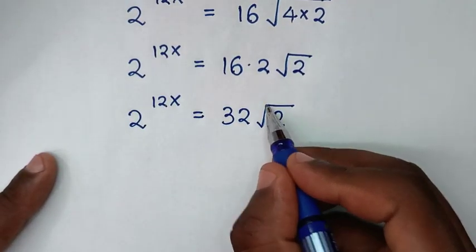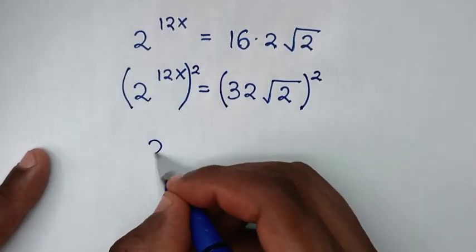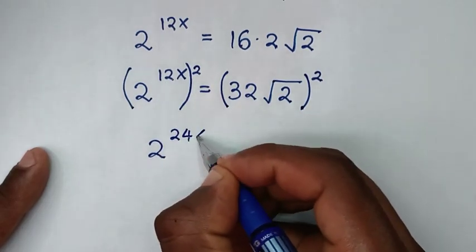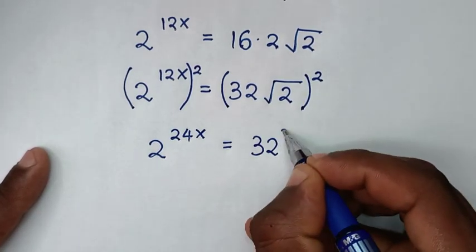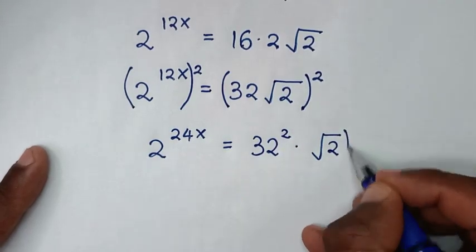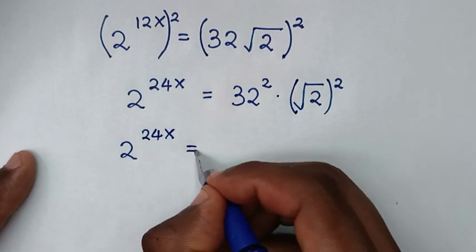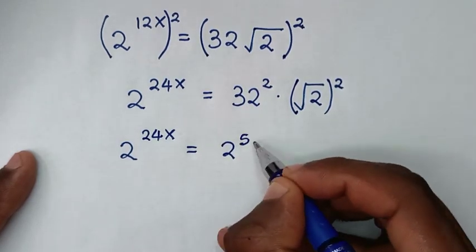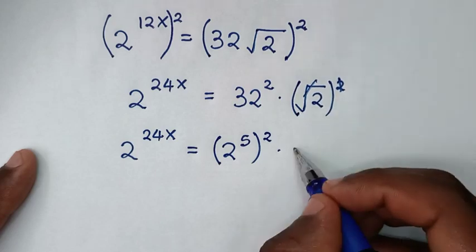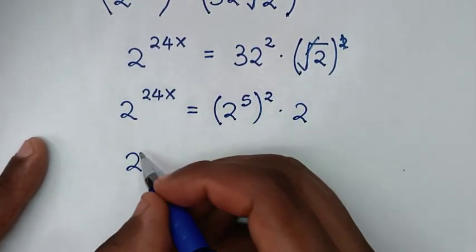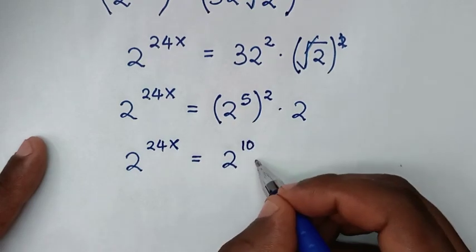To remove the square root of 2, we square both sides again. On the left side, (2^12x)^2 gives 2 power of 24x. On the right side, squaring 32 times the square root of 2 gives (32)^2 times 2, which is 2 power of 5 times 2, equal to 2 power of 10, then times 2.